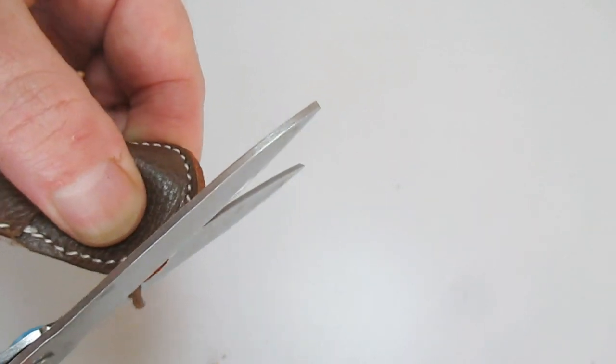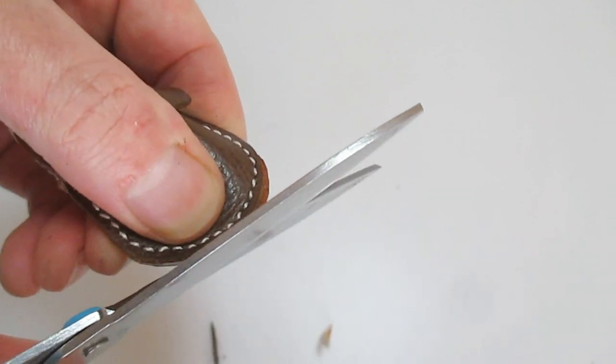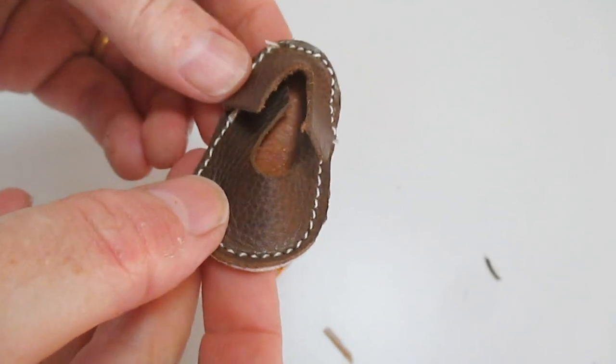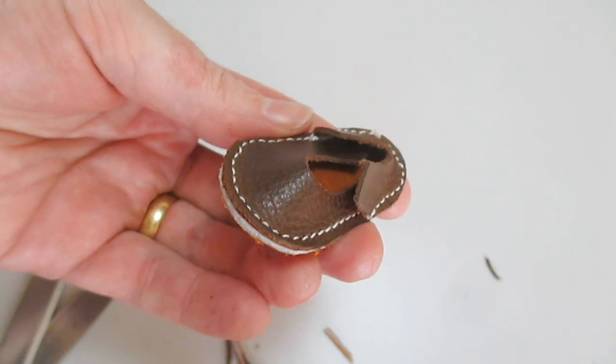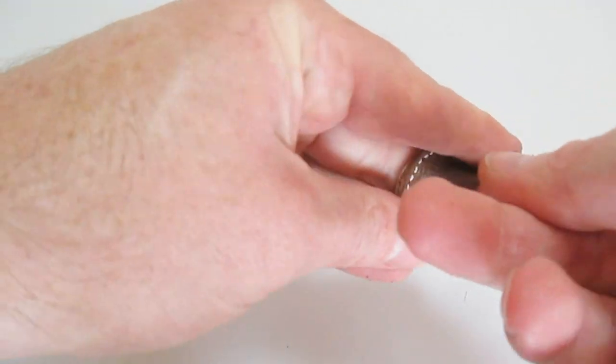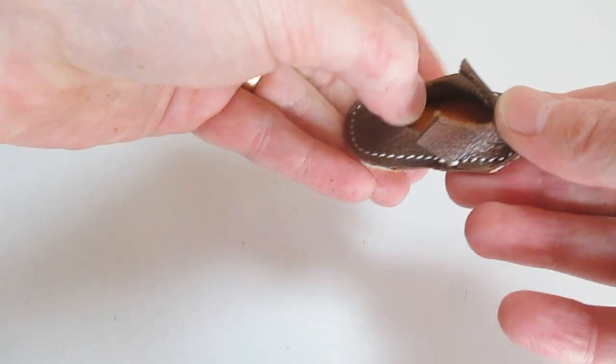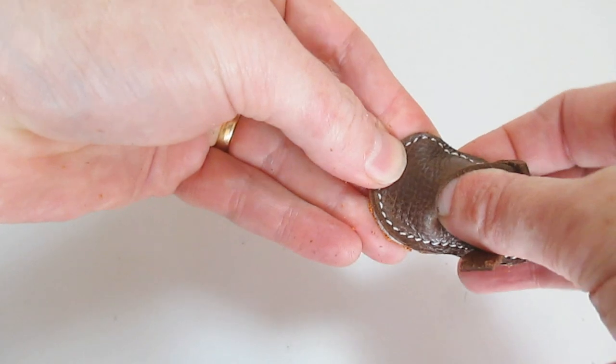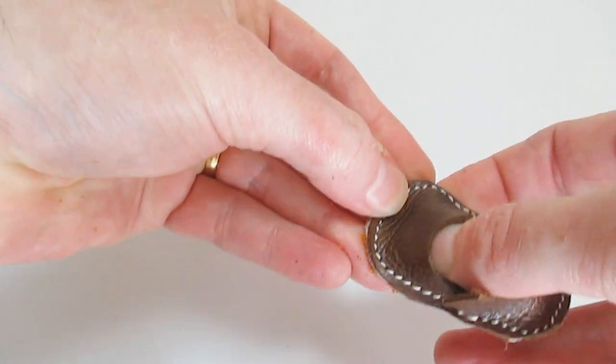Then I can trim around quite close to the stitching line. Keep on stretching it into shape, finessing it, taking time to form the shape of the shoe.